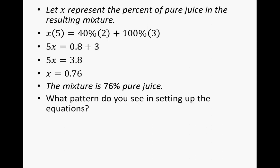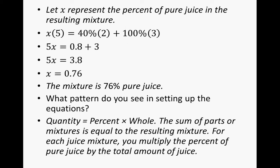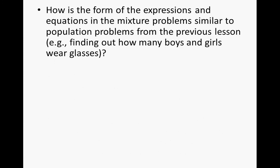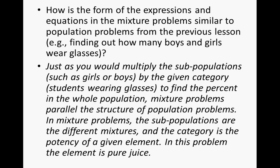The pattern in setting up these equations is: quantity equals percent times whole, and the sum of the parts or mixtures equals the resulting mixture. For each juice mixture, you multiply the percent of pure juice by the total amount of that juice. Mixture problems parallel the structure of population problems — just as you multiply subpopulations such as boys and girls by a given category like students wearing glasses, in mixture problems the subpopulations are the different mixtures and the category is the potency of the given element — in this case, pure juice.